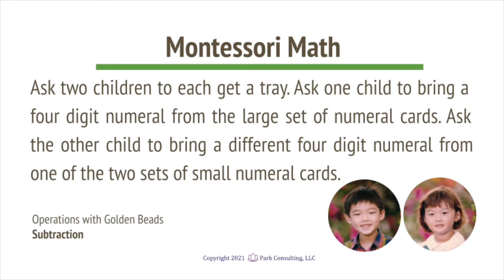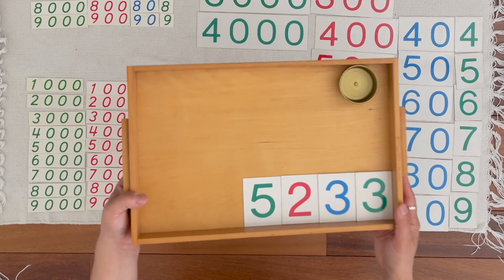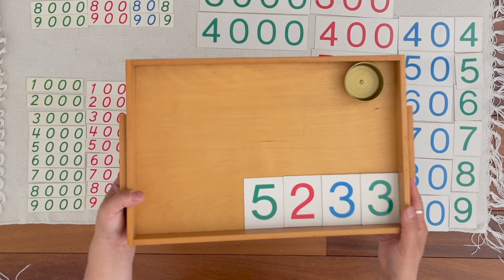This is called operations with golden beads. Johan, you brought five thousands, two hundreds, three tens, three units.